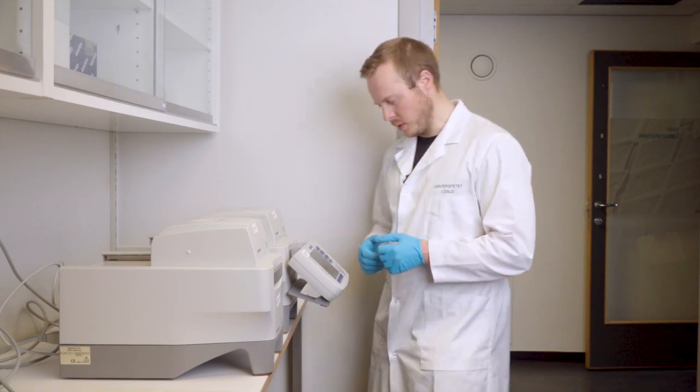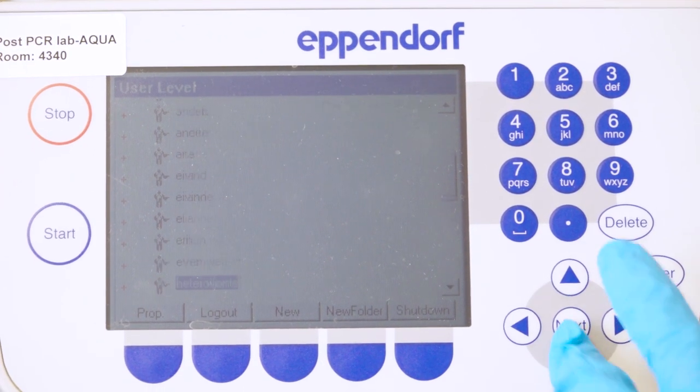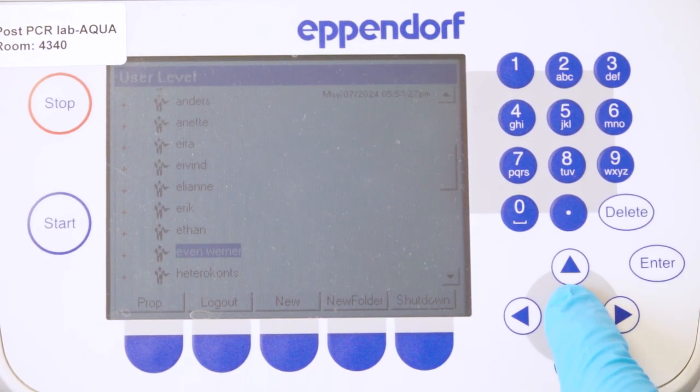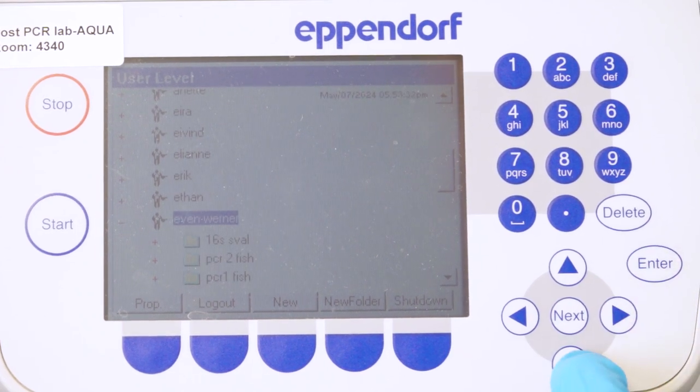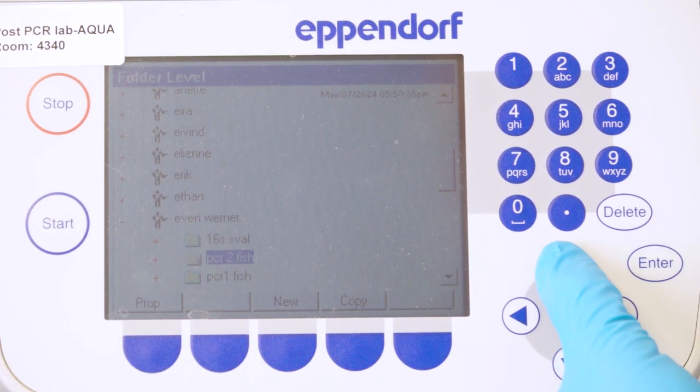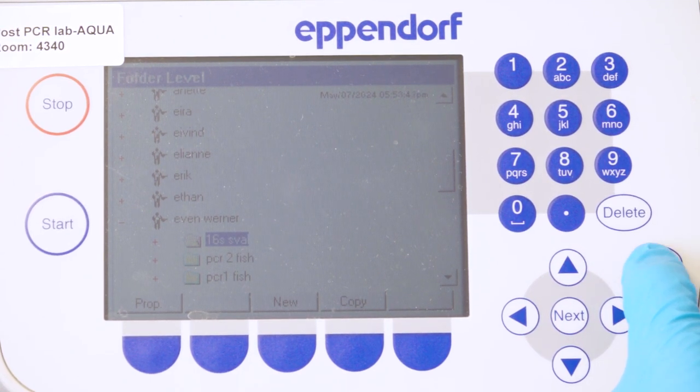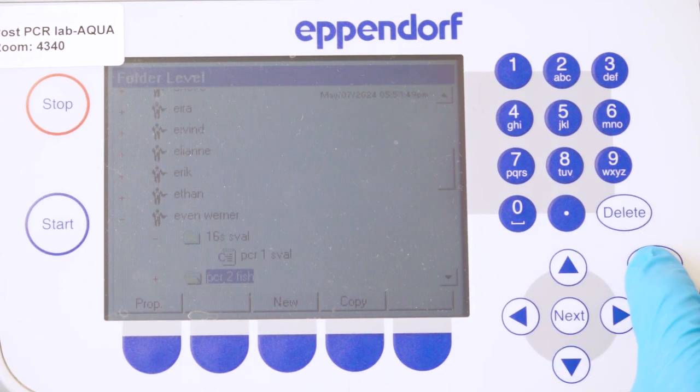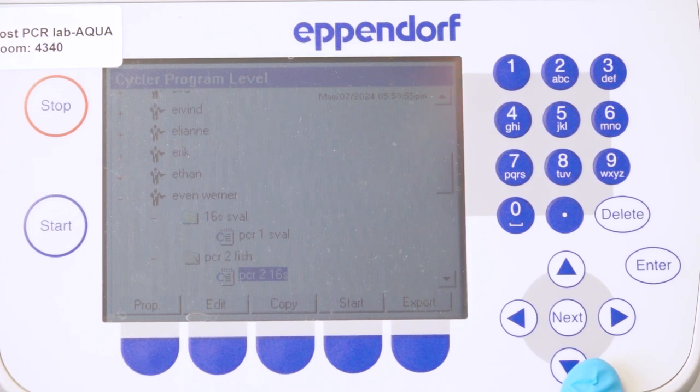I have logged into my user. Here I can select different users. Since I'm logged into my own user, I need to click on that user there with the enter button. Then I see that I have different folders I can go into. 16S is for the bacteria. I didn't have the right program in this folder, but I have another folder with PCR2, and here I have PCR2 for 16S.